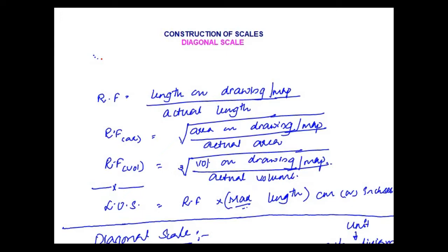Representative factor is length on the drawing by actual length. If representative factor is given in terms of area, then we will take square root of area on drawing by actual area. Similarly, if it is given in terms of volume, then we will take cube root of volume on drawing by actual volume. Ensure that the numerator and denominator have the same units. Length of scale is representative factor times maximum length to be measured, either in centimeters or inches.